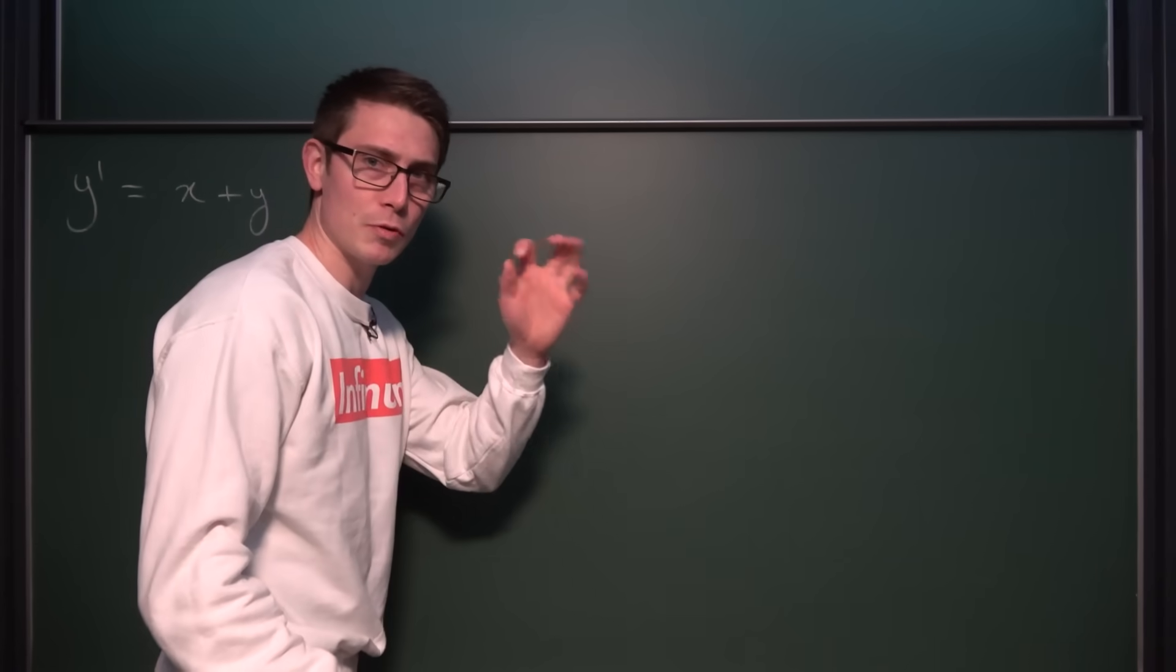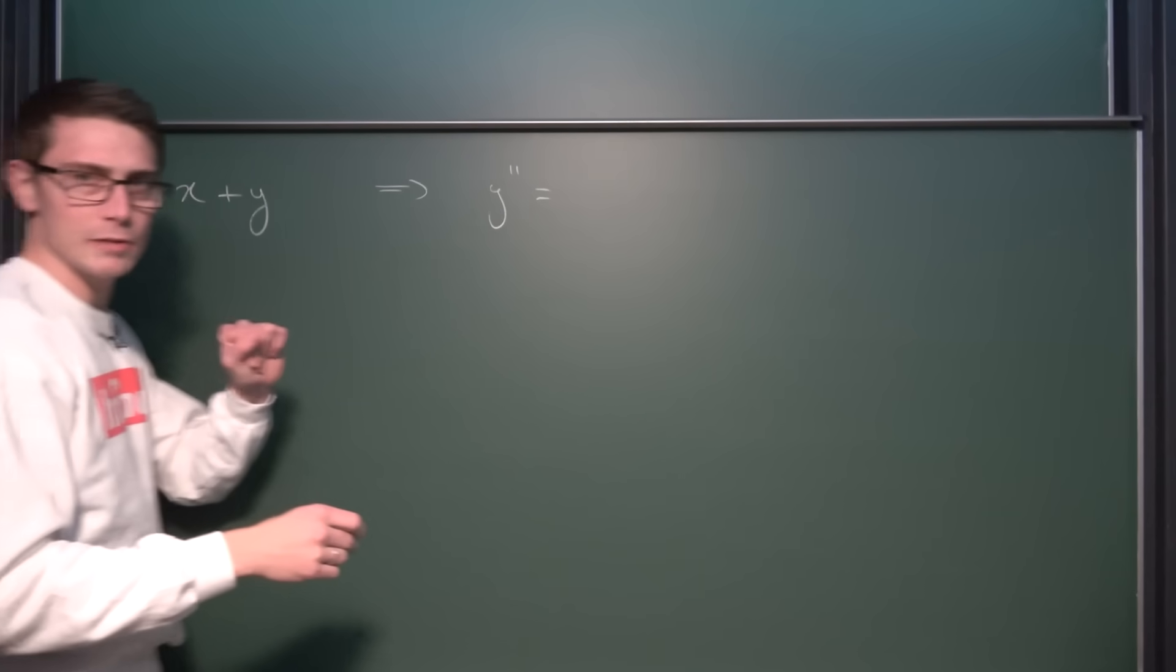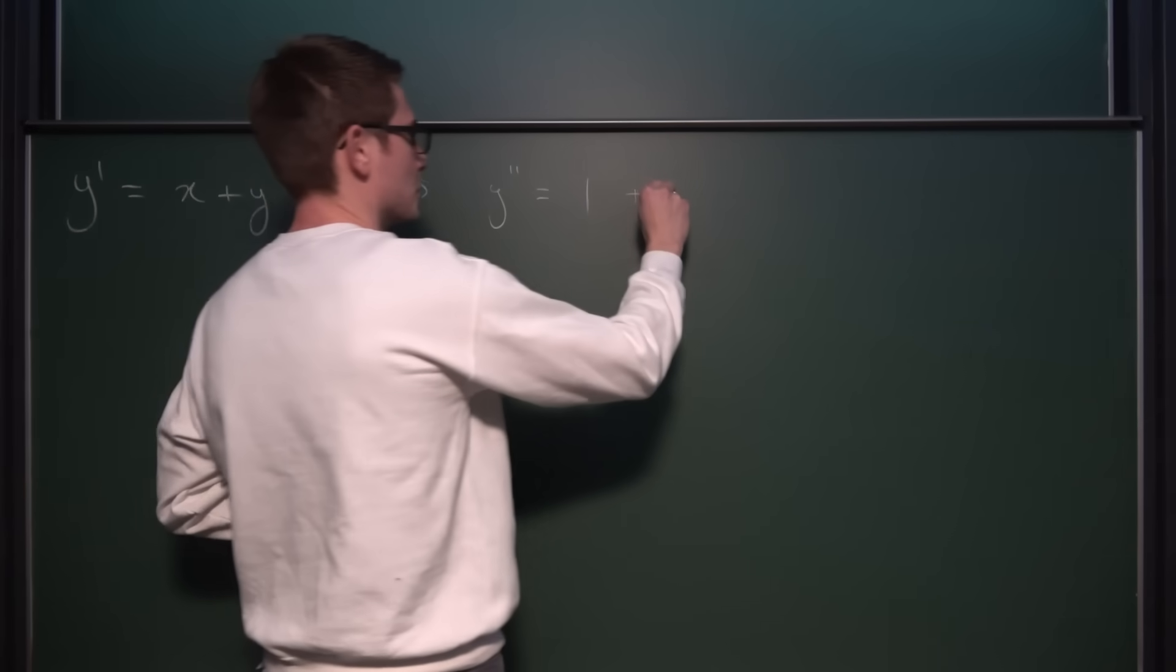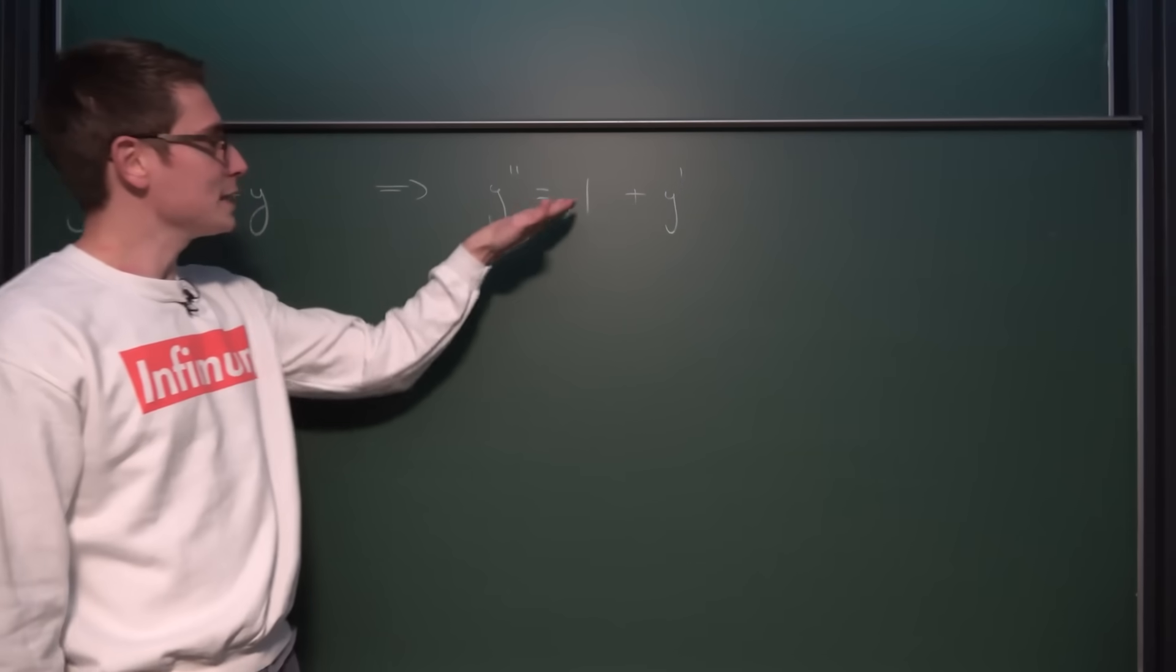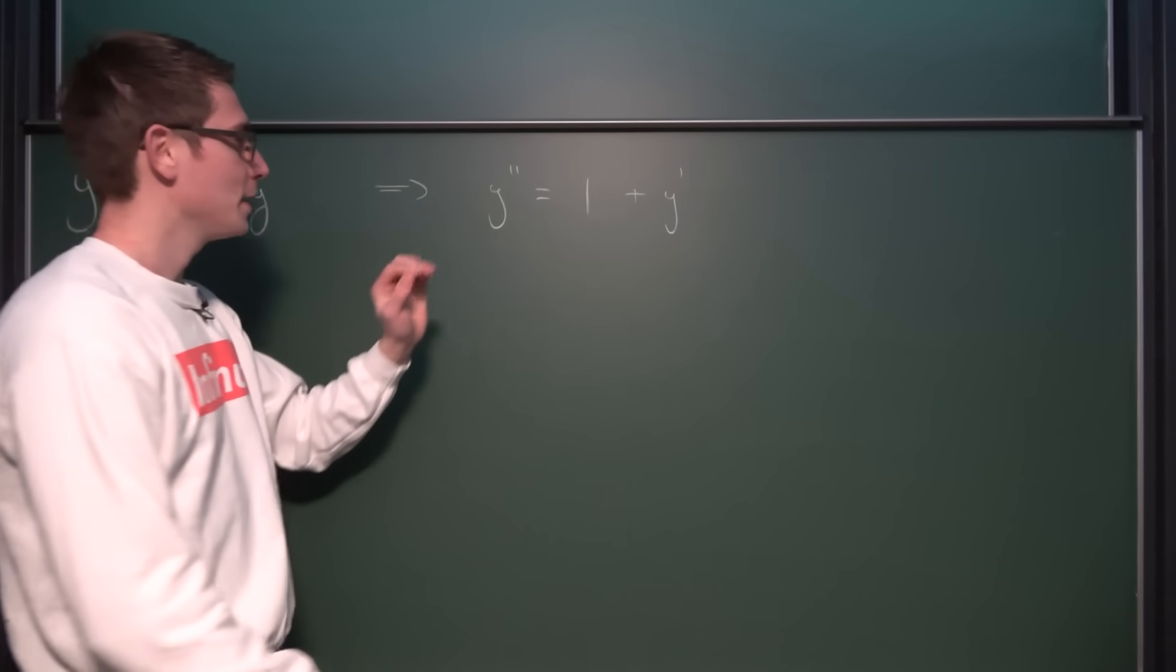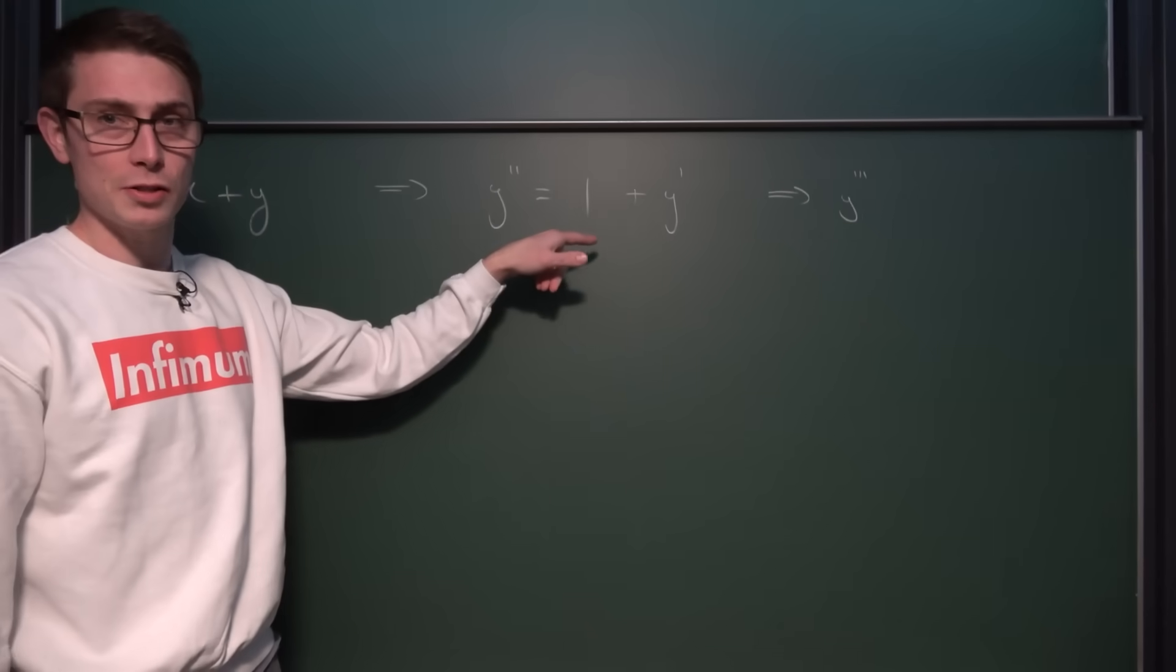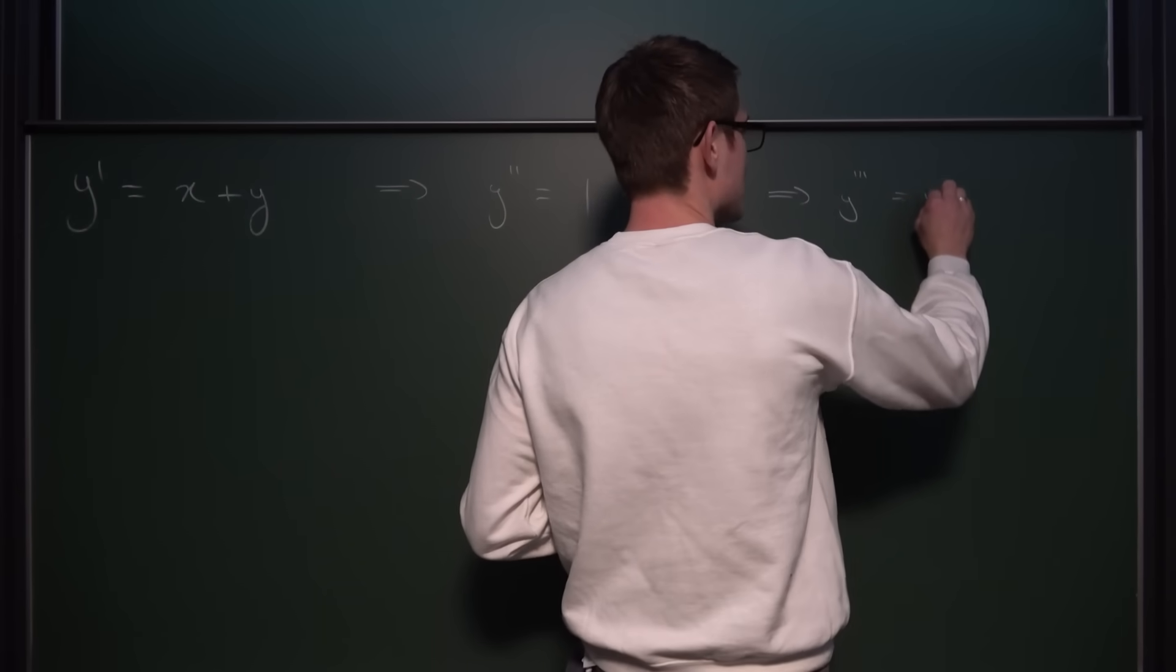If we do that, then Y' differentiated with respect to X is going to turn into Y'' is equal to X differentiated with respect to X is just 1, and then we are going to get plus the differential of Y with respect to X, which is Y'. Okay, I'm going to differentiate this right here another time and see what we are going to get out. Now, if we do this, then Y'' is going to turn into Y''' is equal to 1 is going to vanish, it's a constant, and Y' is going to be differentiated to Y''.